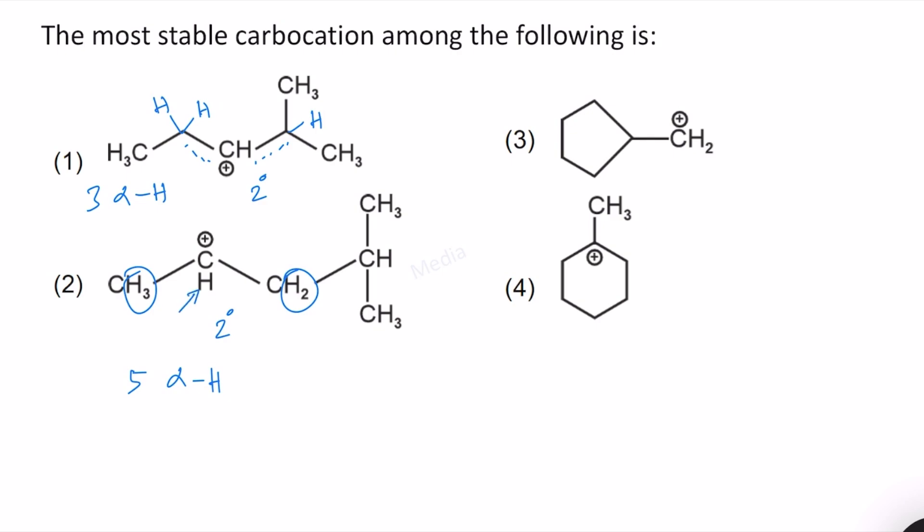And then in structure 3, we have only 1 alpha hydrogen atom. This is a primary carbocation.